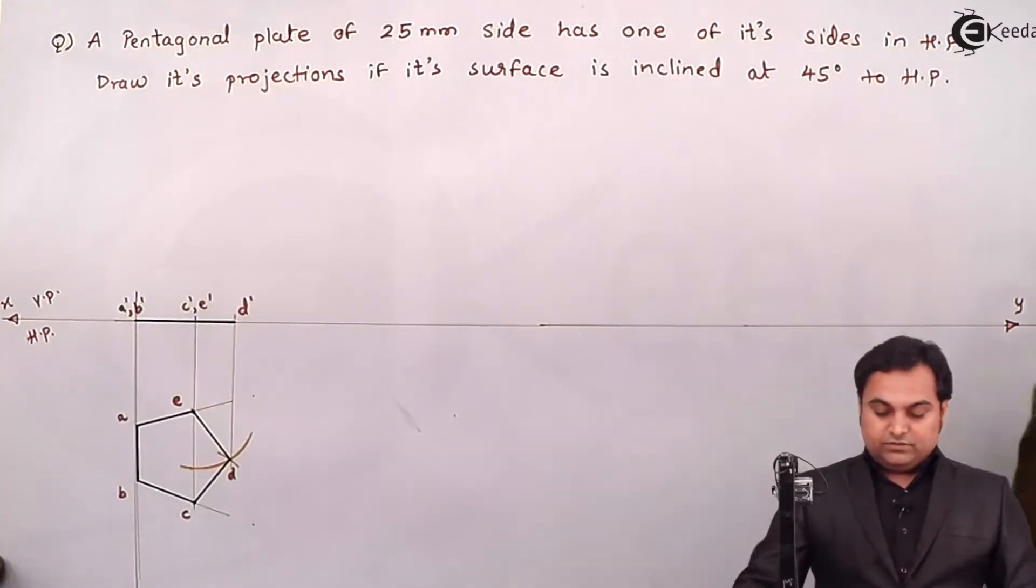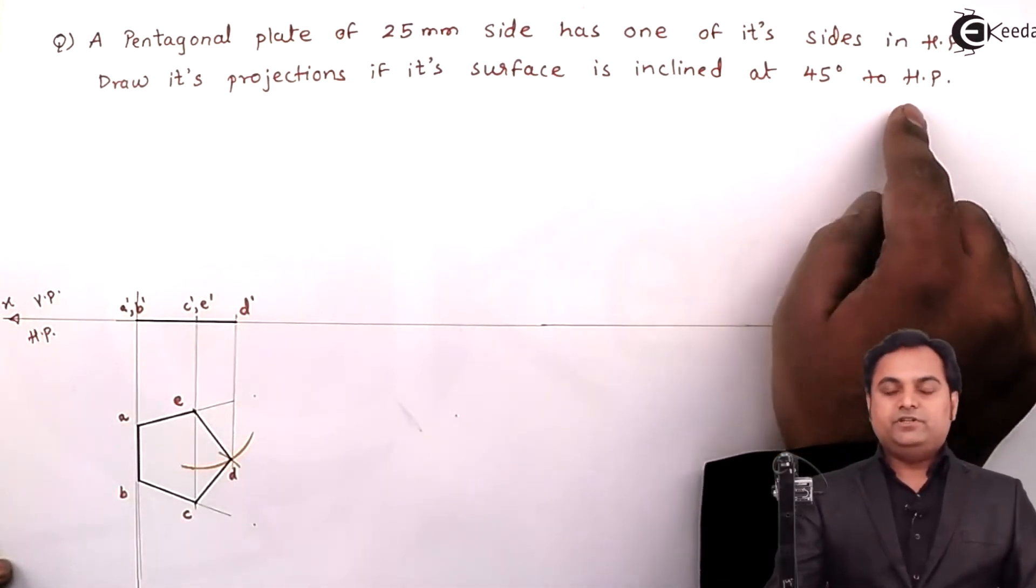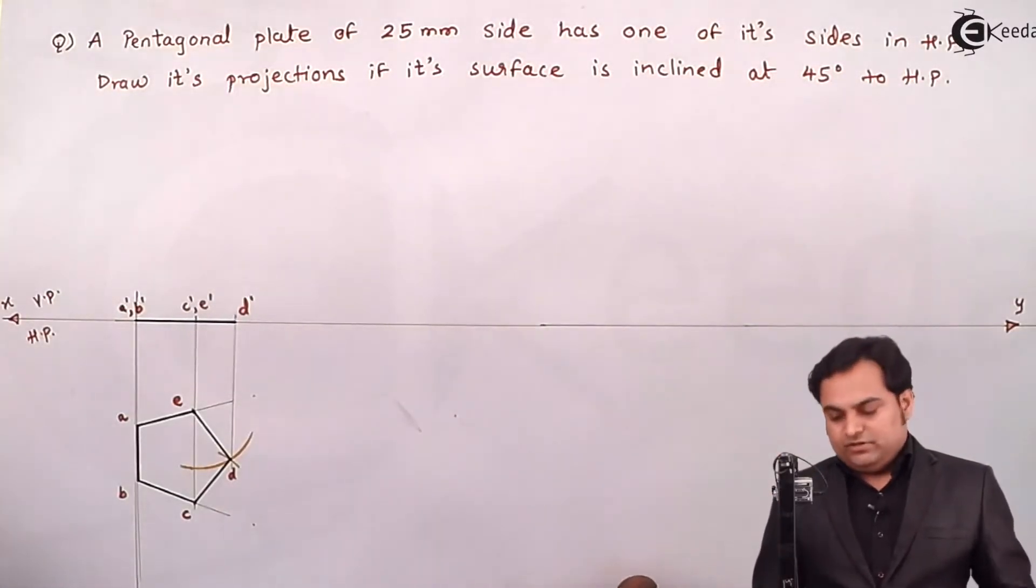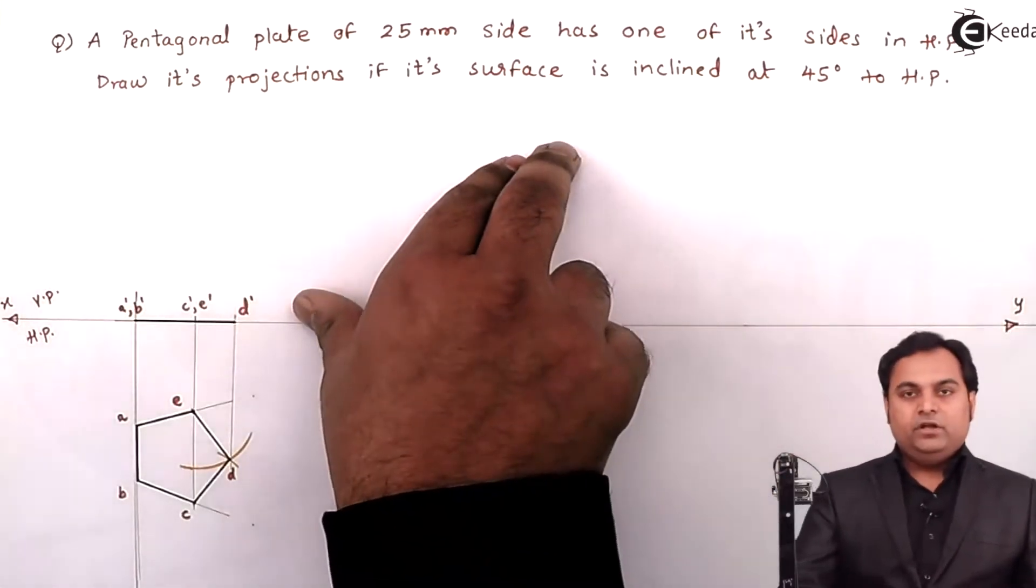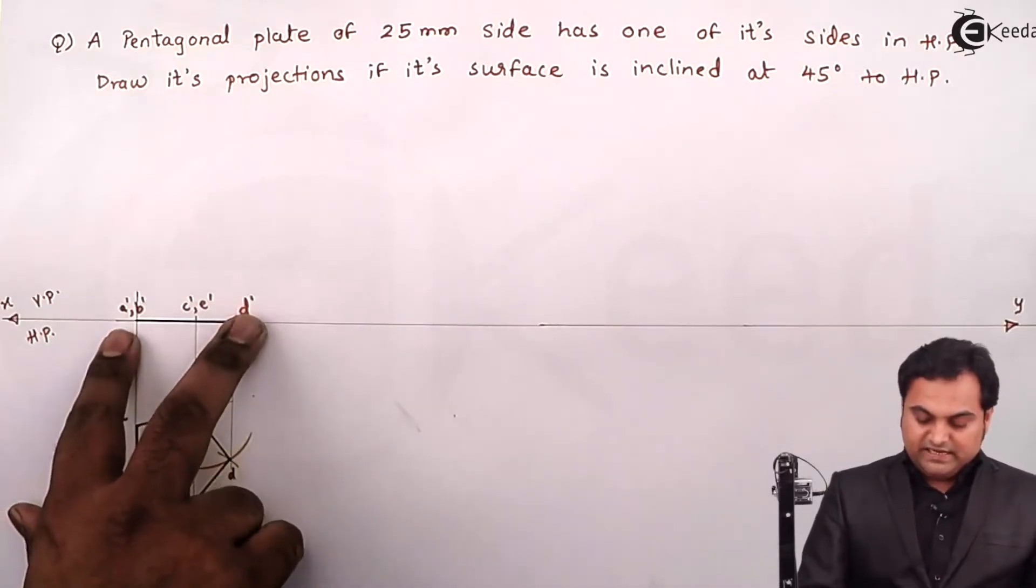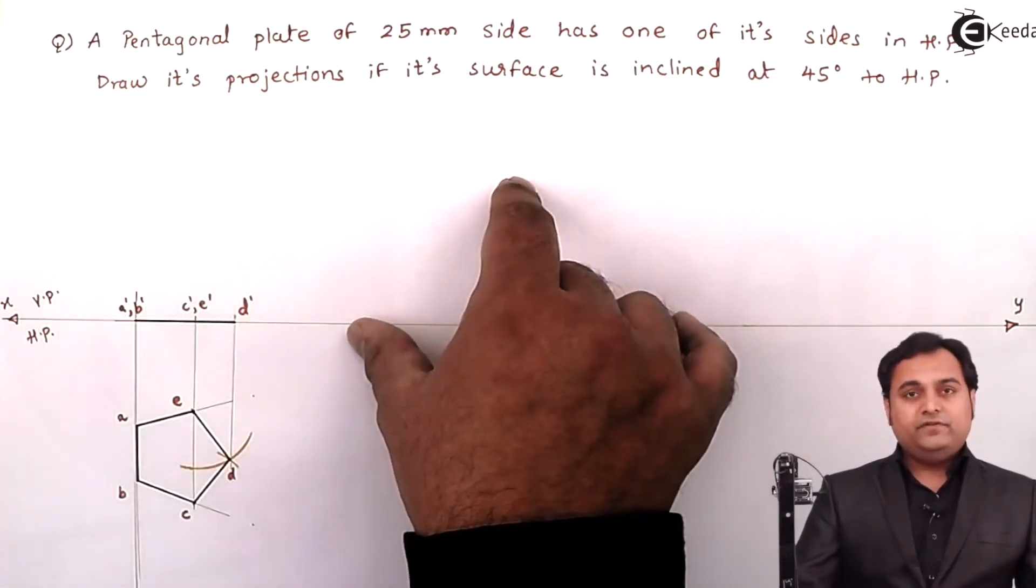The next condition is draw its projections if its surface is inclined at 45 degrees to HP. Now inclination at 45 degrees to HP will be visible in VP, so the next thing will be I'll keep this line which is a plane and make this plane inclined at 45 degrees.